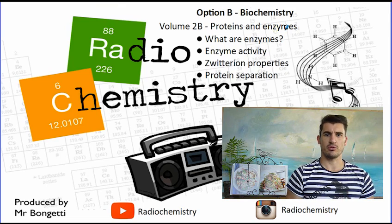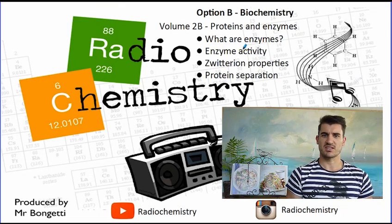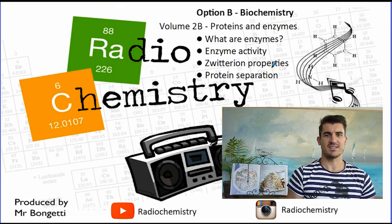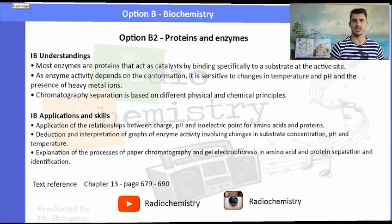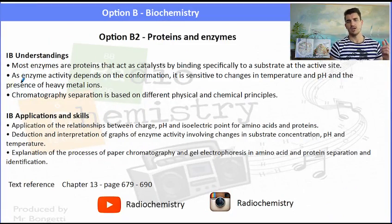Biochemistry 2B, proteins and enzymes. We have a discussion about enzymes and enzyme activity. We refer back to zwitterions and we look at protein separation. IB understandings and applications still come from 2B, where we finish off looking at proteins and enzymes.